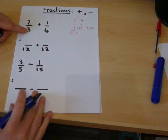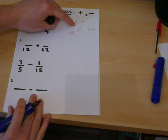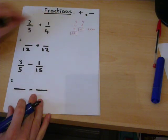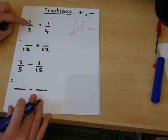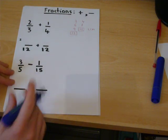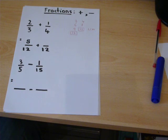However, the 3 has occurred 1, 2, 3, 4 times. It has been timesed by 4. So times the top by 4 as well. 2, 4, 6, 8. You get 8 twelfths.